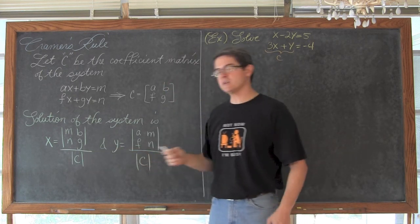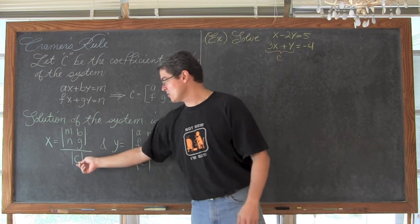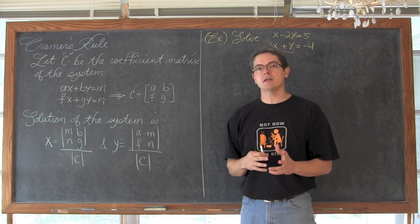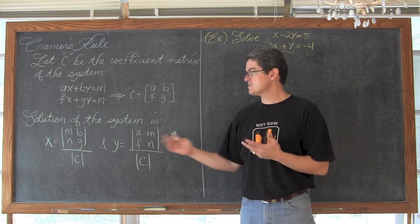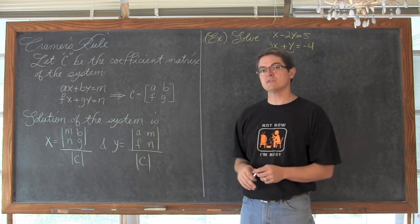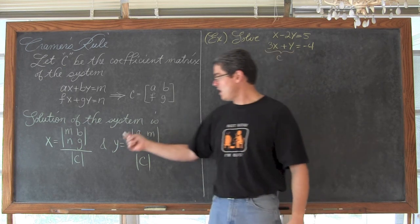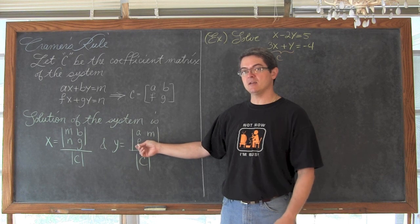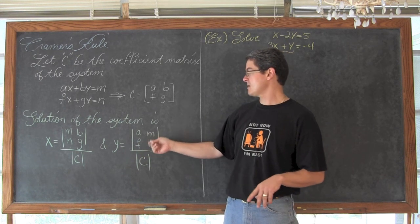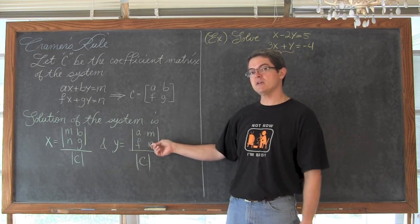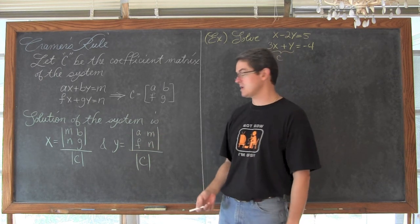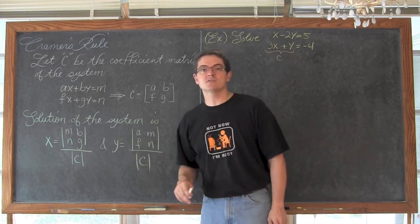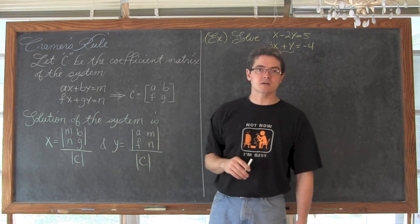The formula in my textbook uses just the determinant of C in the denominator because we are going to have the same value in the denominator for both steps of solving for x and y, so we are just saving some writing. Then y is going to be: go back to that coefficient matrix, put the a and the f back in, put the coefficients of x back in, but this time take out the coefficients of y and replace them with those constants m and n. Then find the determinant of that 2 by 2 matrix and divide by the determinant of C.